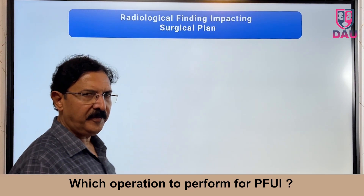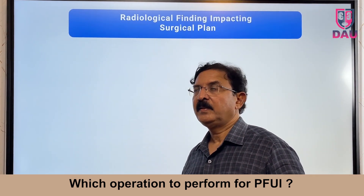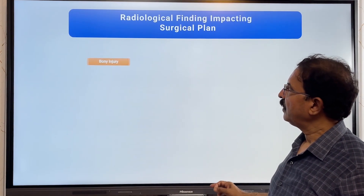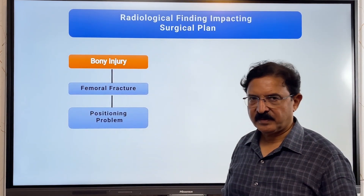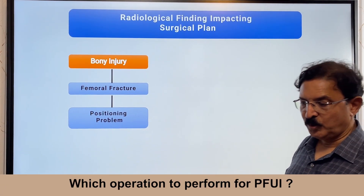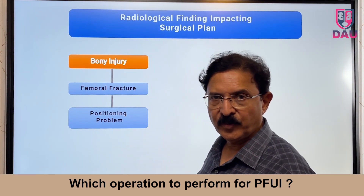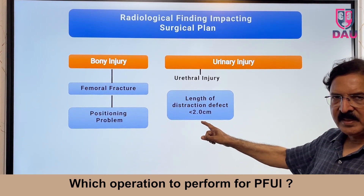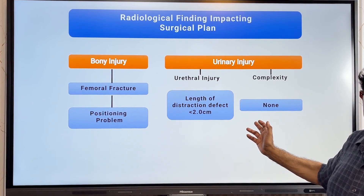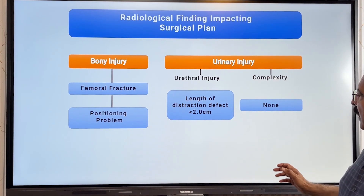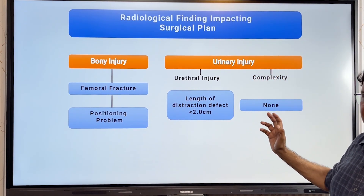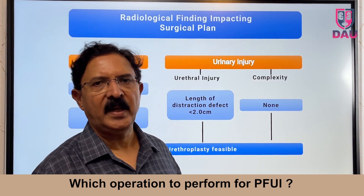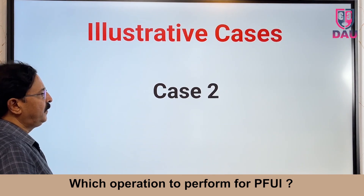Are you now capable of planning this operation from the radiological findings? For bony injury there is a femoral fracture, so there will be some positioning problem — do a squat test and gait test before booking the patient for surgery. For urinary injury, the length of the distraction defect is less than 2 centimeters and there is no complexity. Therefore, you will perform a perineal anastomotic urethroplasty, an end-to-end anastomosis, and you will be fine.